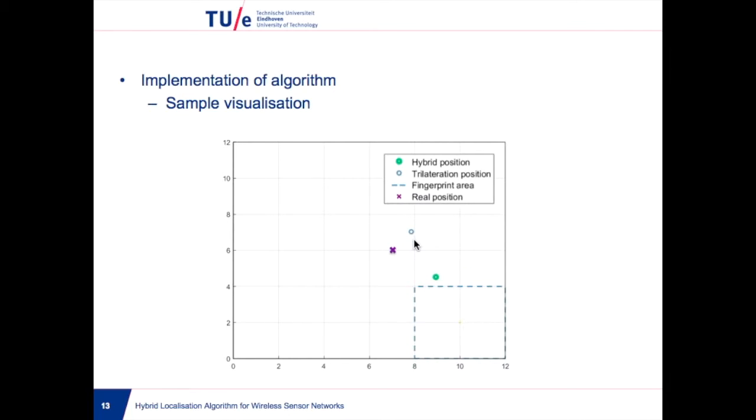With the hybrid algorithm, the final estimation is approximately 9,5, the green mark.